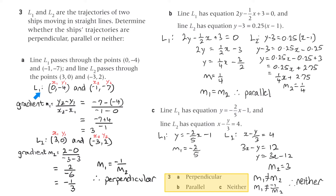The gradient of line 1, m1, is y2 minus y1 over x2 minus x1, which is minus 7 minus minus 4 over minus 1 minus 0. That resolves to minus 3 over minus 1, which equals 3.